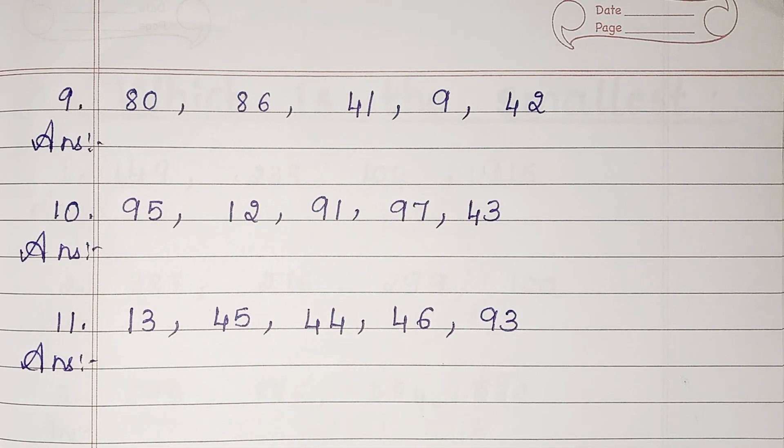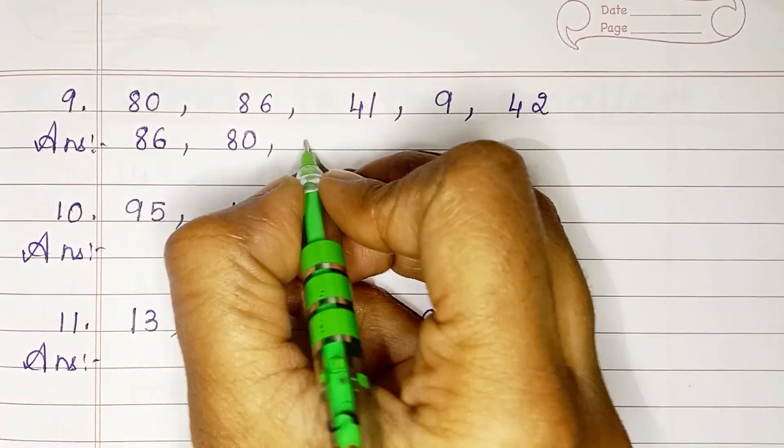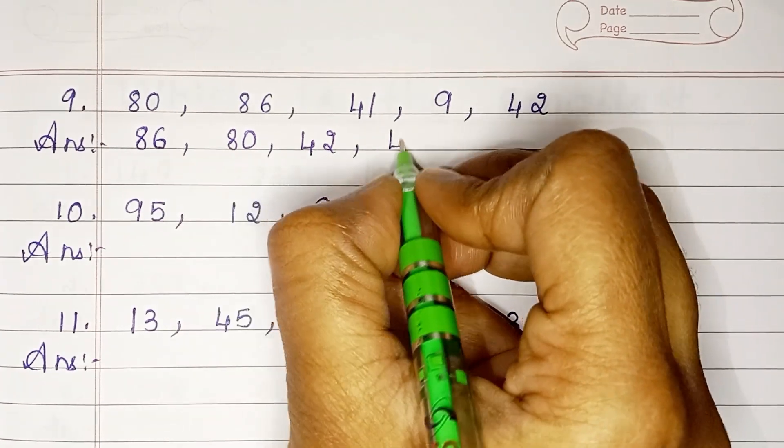In the next set of numbers: 86, 80, 42, 41, 9.